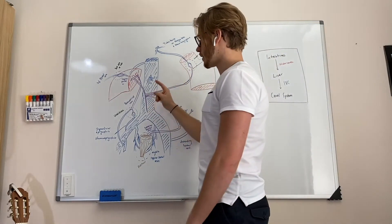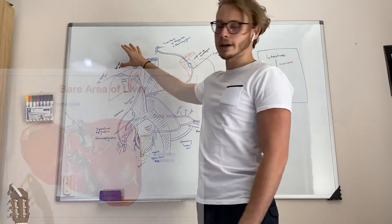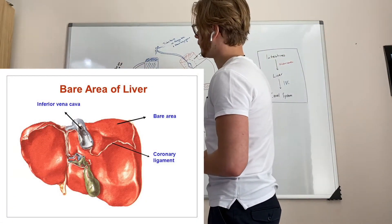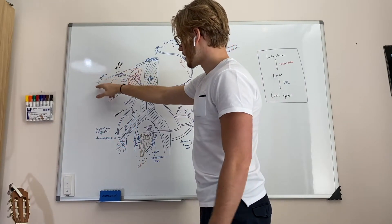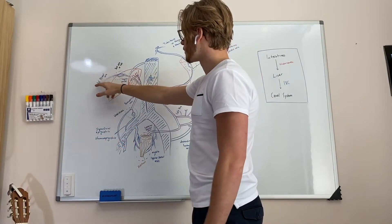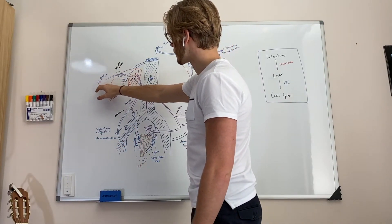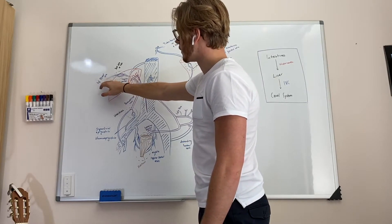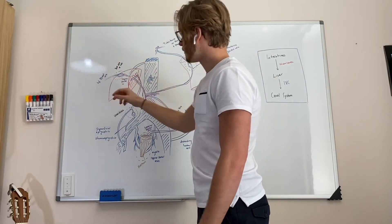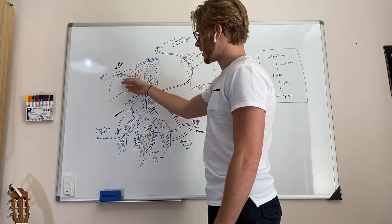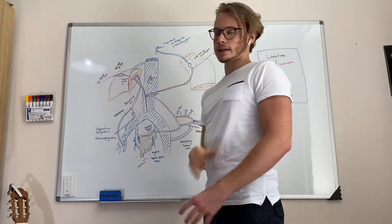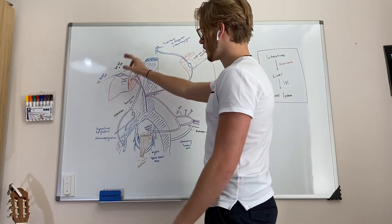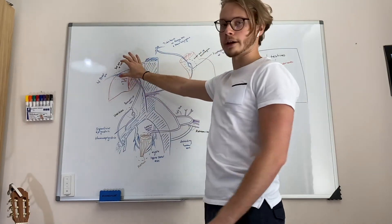Number two: the location is the bare area of the liver. The caval system drains it with the inferior phrenic vein coming from above, and the hepatic portal vein has smaller branches that anastomose with the inferior phrenic at the bare area of the liver.